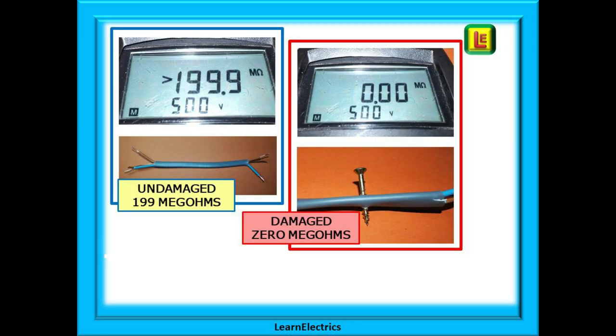Here are two images of meter readings. On the left, the cable is undamaged and the meter maximum — 199 megaohms in this case — is shown. On the right, it is obvious that the cable is damaged. The screw has penetrated the insulation and now the phase wire has a direct short to the earth conductor. A reading of 0 ohms is shown — a direct short.